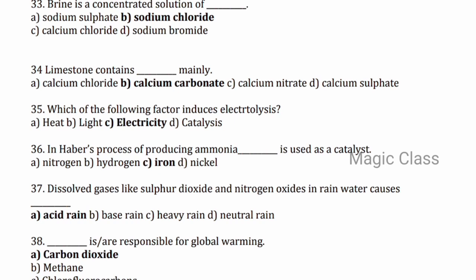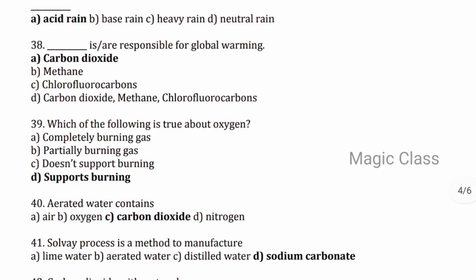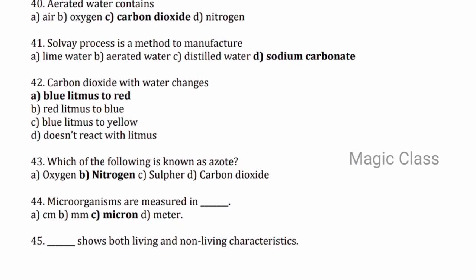Question 35 — which of the following factors induces electrolysis? Answer: electricity. Question 36 — in Haber's process of producing ammonia, iron is used as a catalyst. Question 37 — dissolved gases like sulphur dioxide and nitrogen oxides in rainwater cause acid rain. Question 38 — carbon dioxide is responsible for global warming. Question 39 — which of the following is true about oxygen? It supports burning. Question 40 — aerated water contains carbon dioxide. Question 41 — Solvay process is a method to manufacture sodium carbonate. Question 42 — carbon dioxide with water changes blue litmus to red.